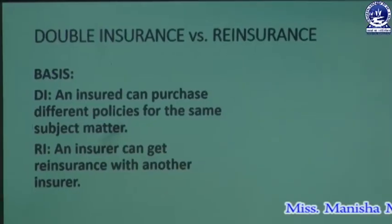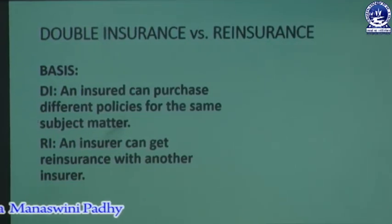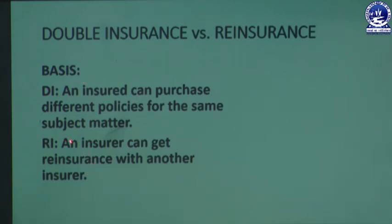Difference between double insurance and reinsurance: First, basis — in double insurance, an insured can purchase different policies for the same subject matter, but in reinsurance, an insurer can get reinsurance with another insurer. In double insurance, the insured takes more than one policy, but in reinsurance, the insurer takes more than one policy.